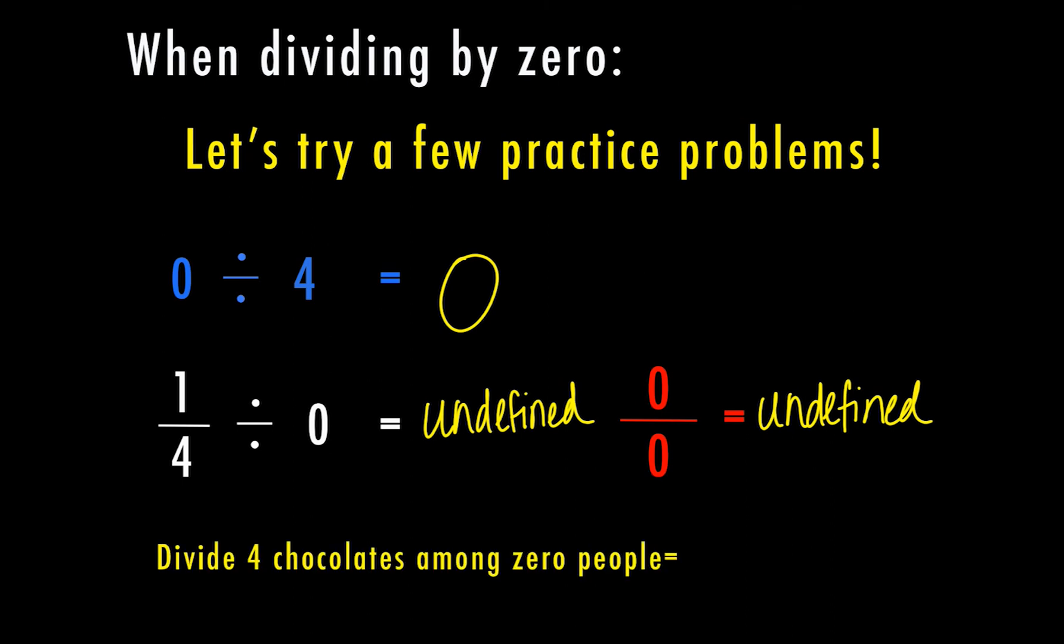And last, if I'm going to divide four chocolates among zero people, if there's no one there to share the chocolates, then my answer is going to be undefined, because I can't divide chocolates by zero people.